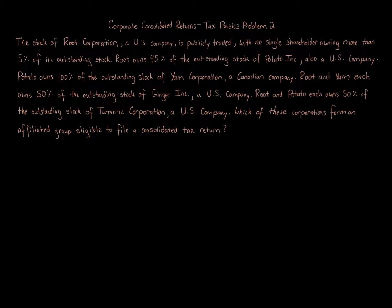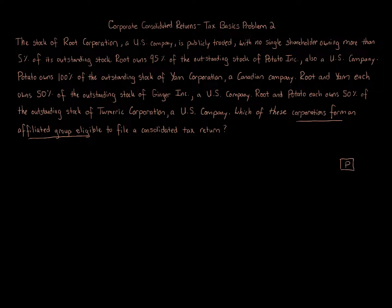We've got a corporate consolidated return. I have another problem on this where I introduced the topic — please make sure you watch the first problem. The question is asking which of these corporations form an affiliated group. They're all C corporations because we're told 'corporation' or 'inc' — nothing says S corporations. Some say U.S. and some say Canadian, which is going to be important. To have an affiliated group, you need a parent-to-subsidiary relationship denoted with rectangles, where ownership is greater than or equal to 80% direct or indirect.